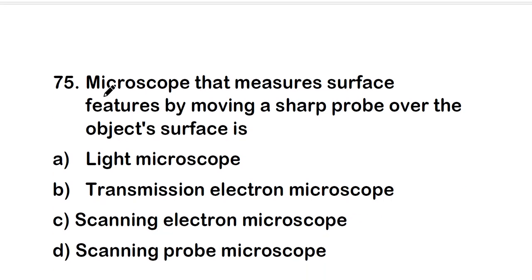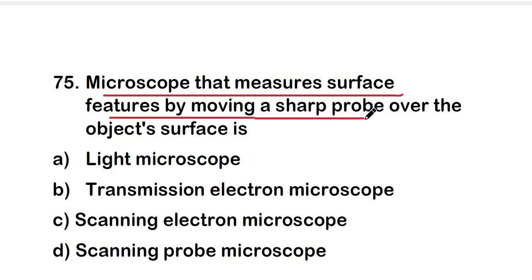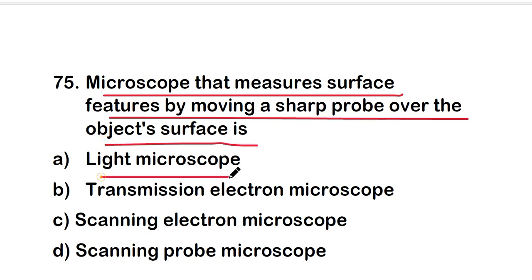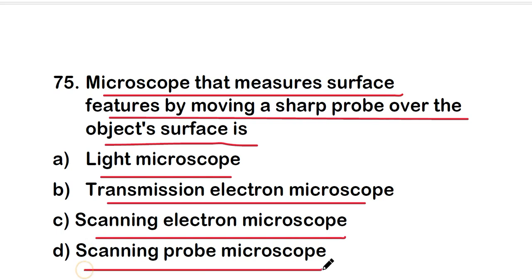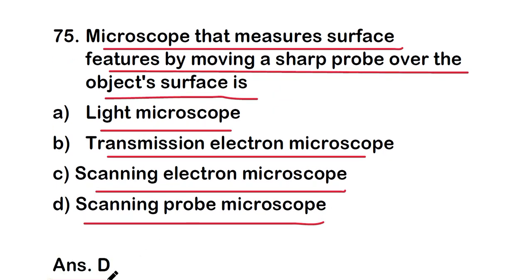Next question: the microscope that measures surface features by moving a sharp probe over the object surface is — light microscope, transmission electron microscope, scanning electron microscope, or scanning probe microscope? The right answer is option D — scanning probe microscope measures surface features by moving a sharp probe over the object surface.